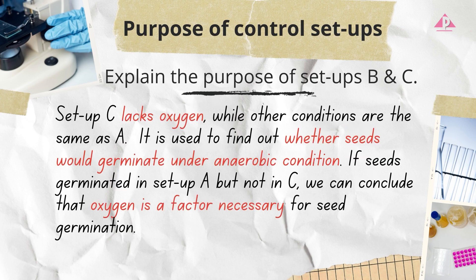Take setup C as an example. We should first describe the difference between the experimental and control setup: setup C lacks oxygen while other conditions are the same as setup A. Then explain its function: to find out whether seeds would germinate under an aerobic condition. If seeds germinate in setup A but not in C, we can conclude that oxygen is a factor necessary for seed germination.